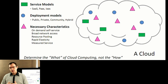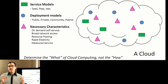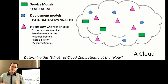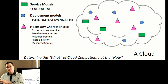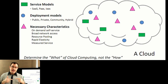Broad network access generally means available across the public internet, but certainly available through lots of points of origin. That doesn't necessarily have to mean that it's available on the public internet, but you can't say it's a cloud if there is only one way in and one way out.